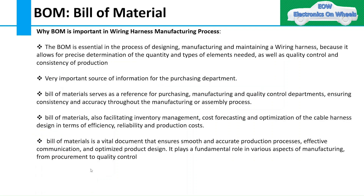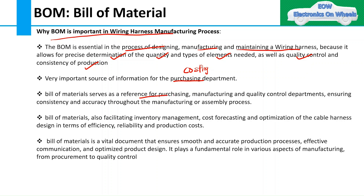Let's understand why bill of material is important in the wiring harness manufacturing process. The BOM is essential in the process of designing, manufacturing, and maintaining a wiring harness, because it allows for precise determination of the quantity and types of elements needed, as well as quality control and consistency of production. It is also an indispensable source of information for the purchasing and costing departments. Because a budget is allocated to your wiring harness project, and within that budget you need to manage your wiring harness cost, detailed information about the quantity of each component is very much required. Bill of materials serves as a reference for purchasing, manufacturing, and quality control departments, ensuring consistency and accuracy throughout the manufacturing or assembly process.